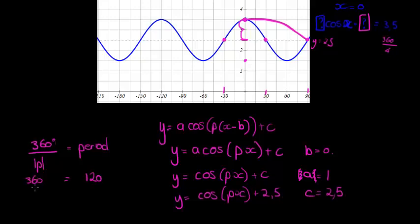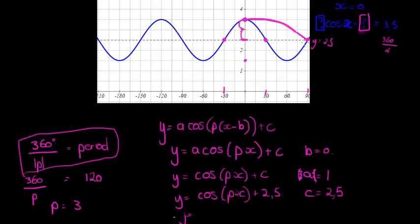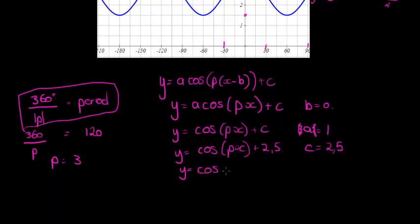So the period is 120. That means 360 divided by p equals 120, so p = 3. You could also see it as: I should have met the center line at 90 degrees, but I'm already meeting it at 30 degrees, so things are happening three times quicker, meaning x is being multiplied by 3. Either way, p = 3, giving us the final equation y = cos(3x) + 2.5.